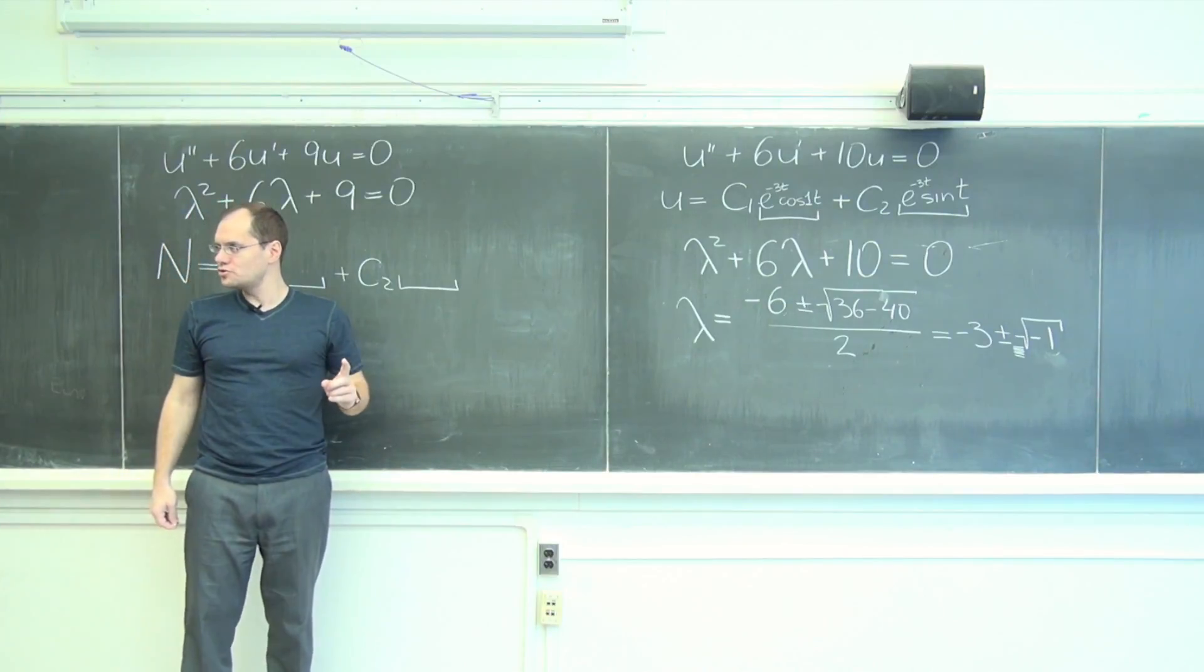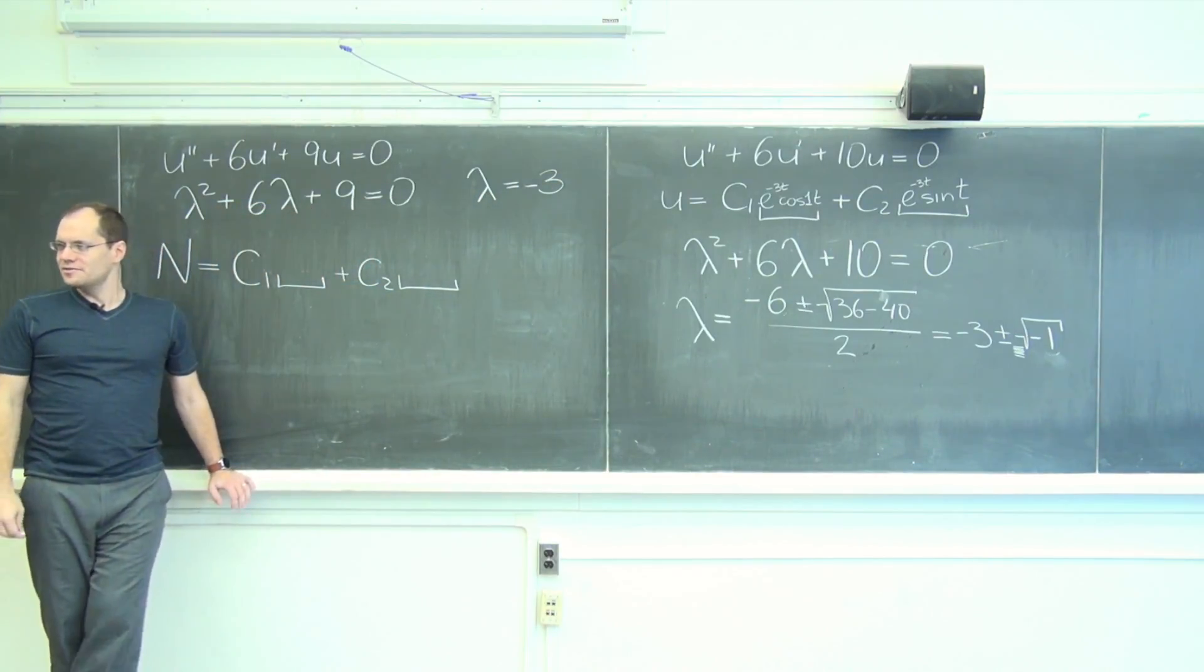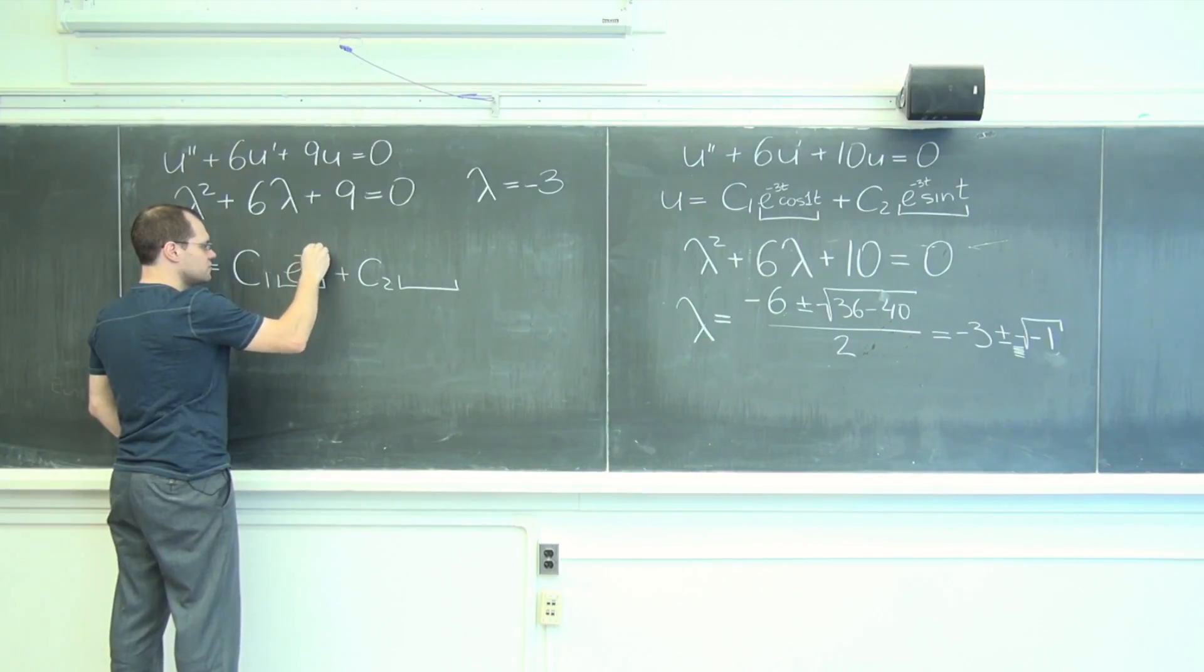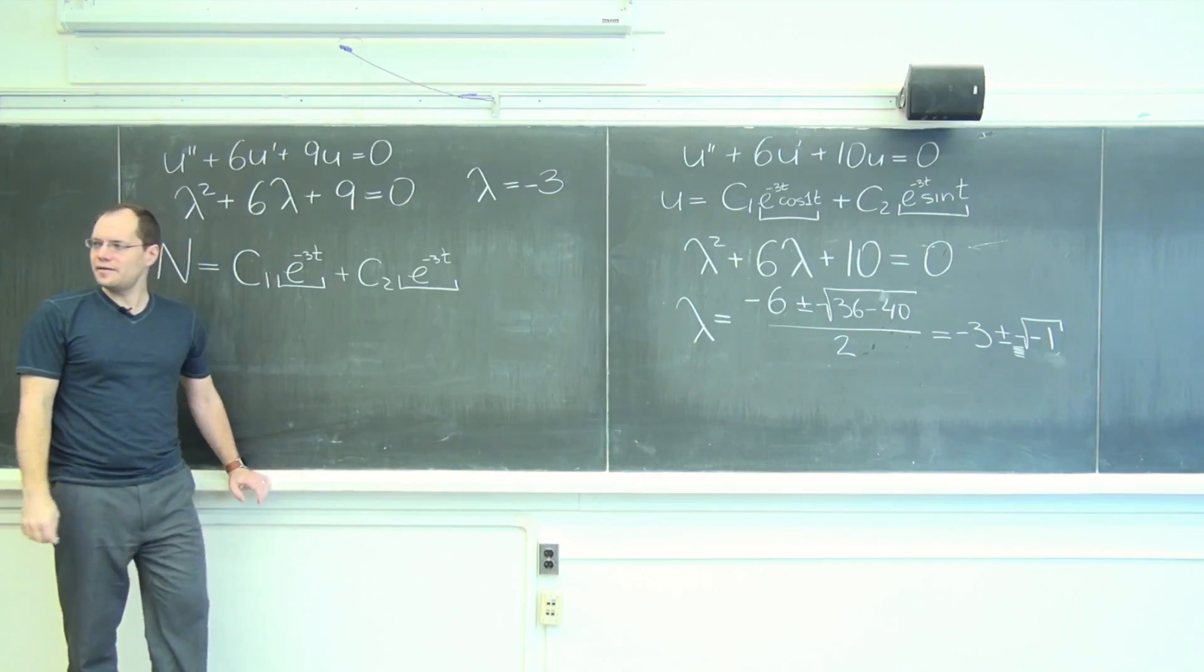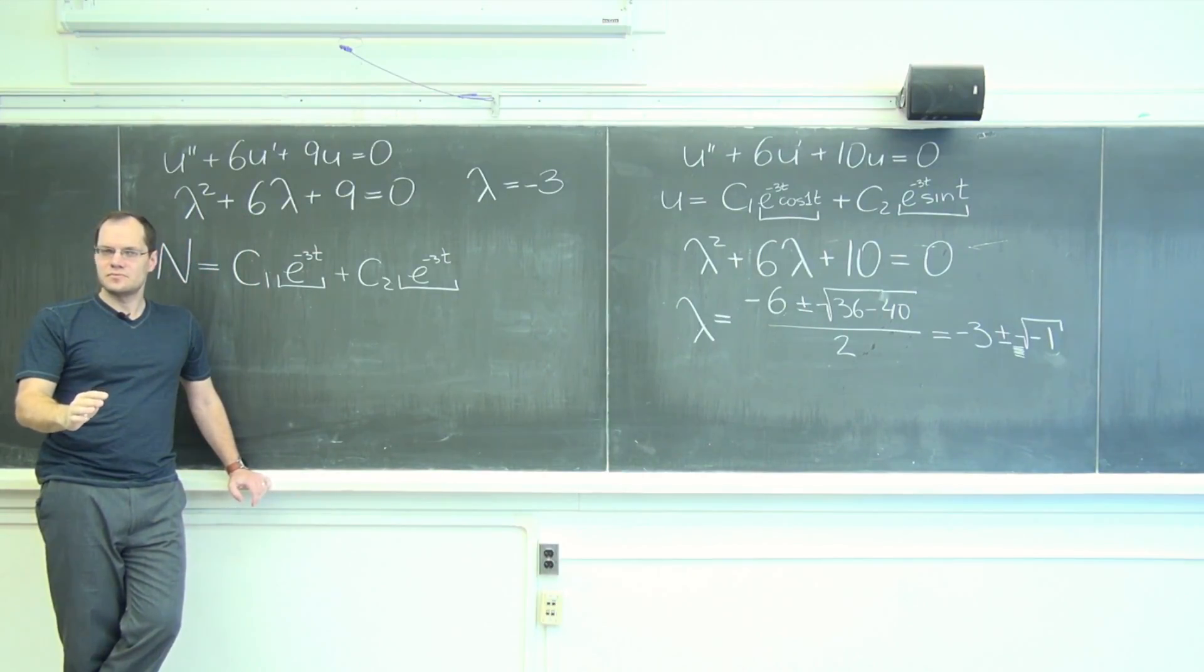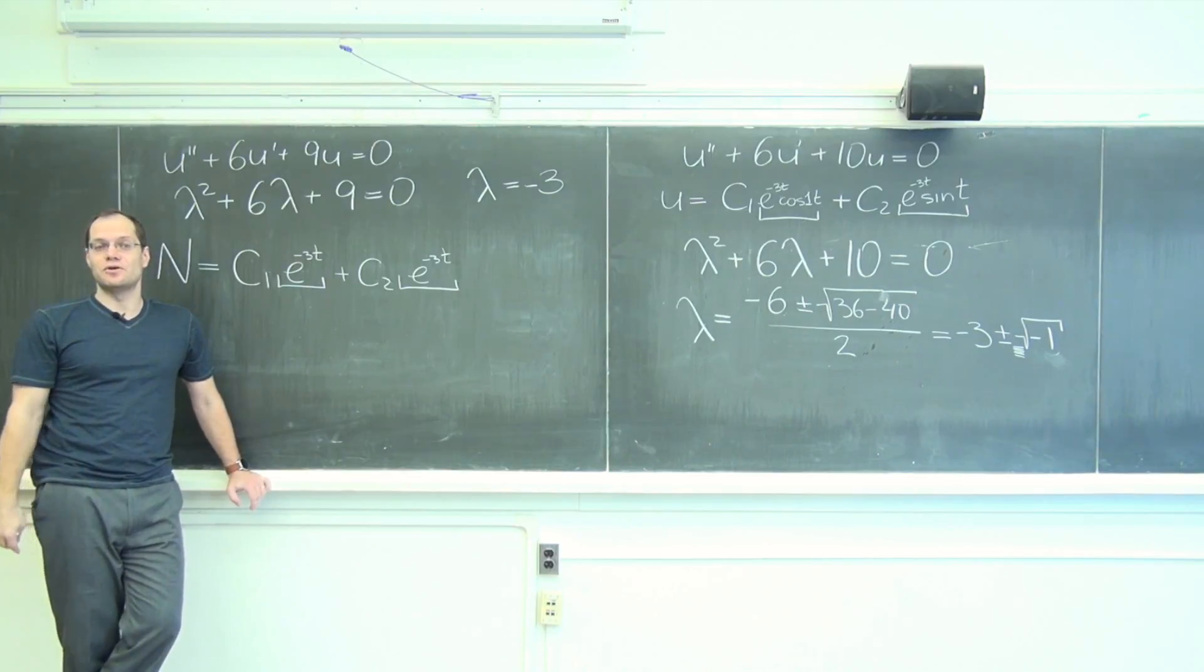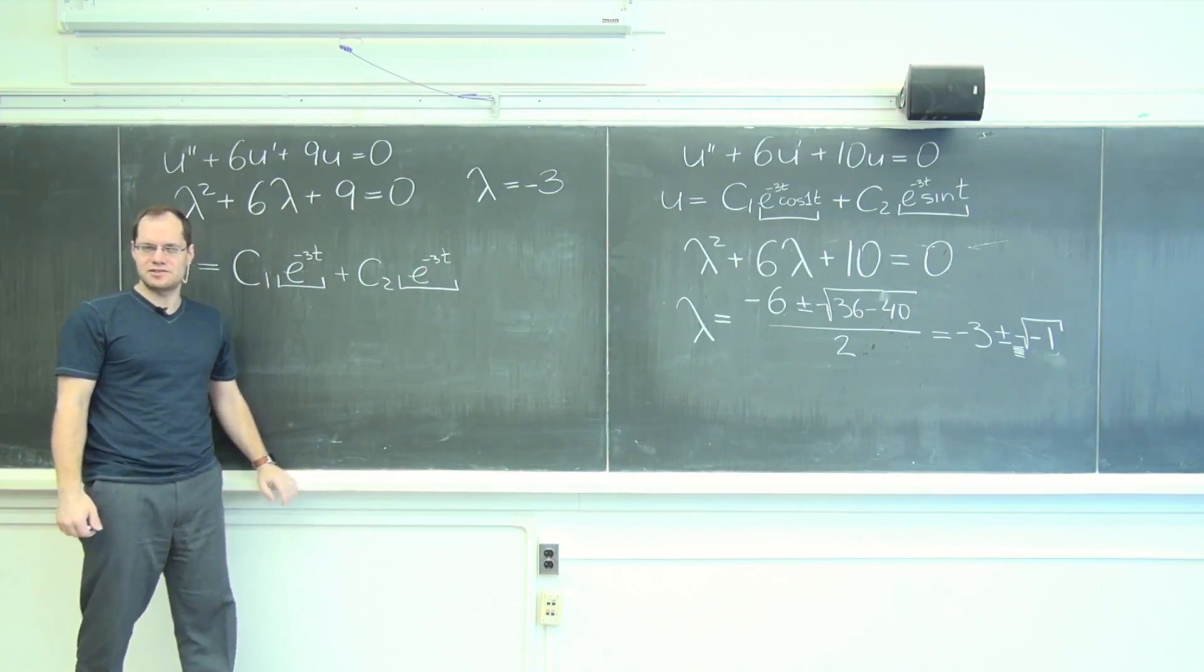And the two roots, both negative three. And so, if you proceed the way you used to, you would write this. Okay? And if you're just studying calculus, you're thinking, okay, that's a little strange. But I'm okay with it, because it's actually simpler than what I had before. Because I can simplify this. It's C1 plus C2 e to the minus 3t.